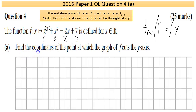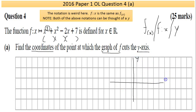Part A asks us to find the coordinates — that's an x and a y value — at which the graph of f cuts the y-axis. There's an overriding principle in coordinate geometry: your y-axis and your x-axis — when an equation like this is put equal to zero, at the x-axis y equals zero all the way along.